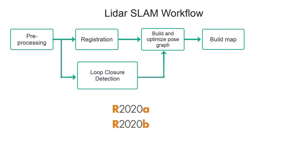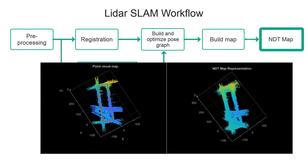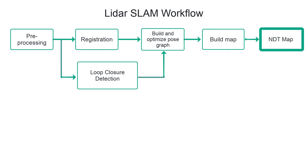Until release 21A, you could use this technique to build a point cloud map and store it in a point cloud object. In 21A, you can store it in a memory-efficient NDT map representation. With this representation, you can also localize in the built map.